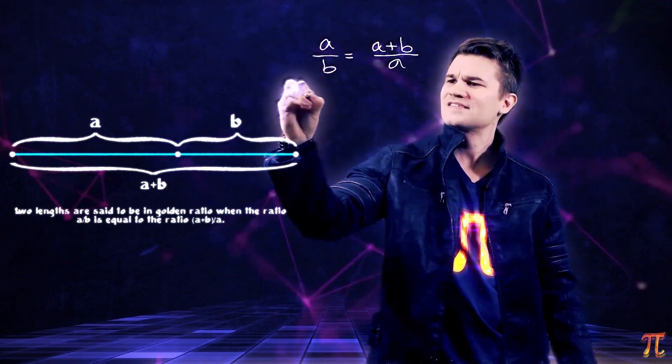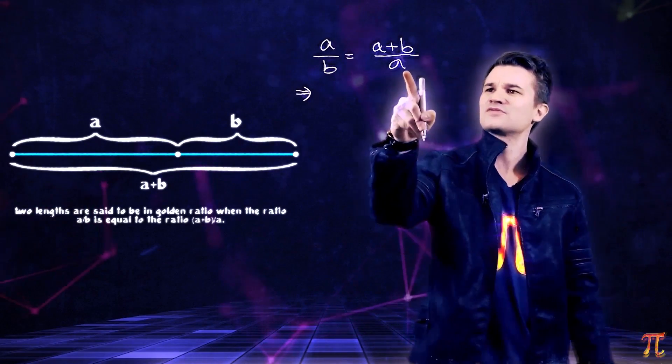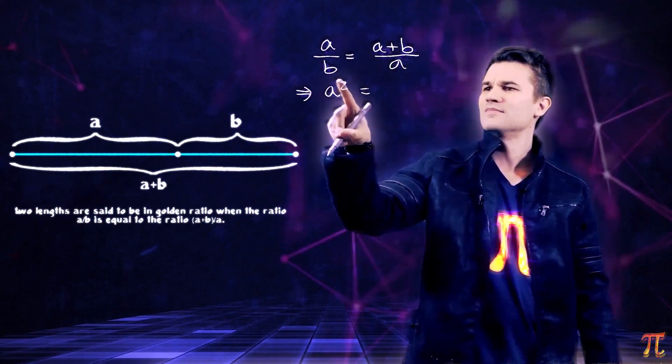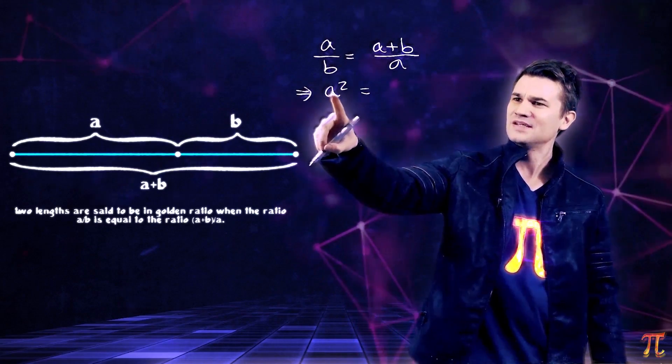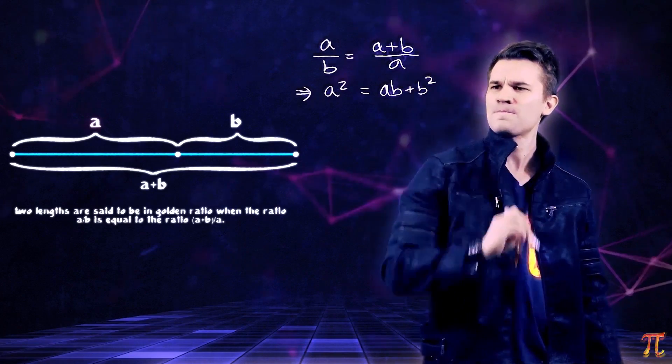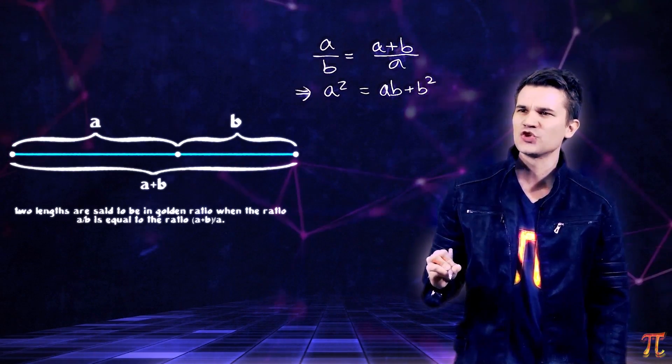Now we can multiply both sides by b, so we have ab plus b squared here. Okay, so far so good.